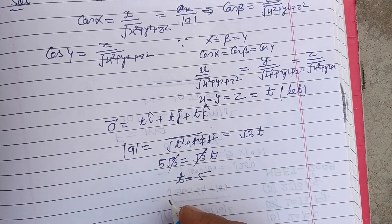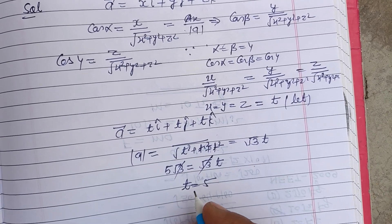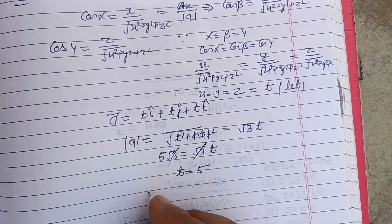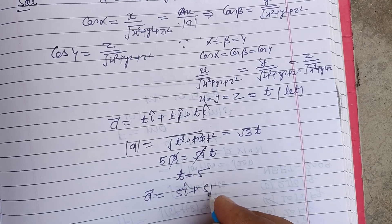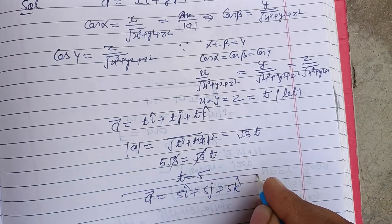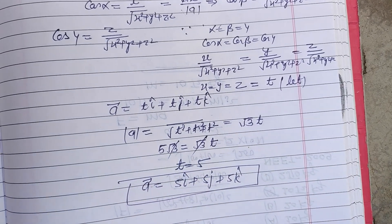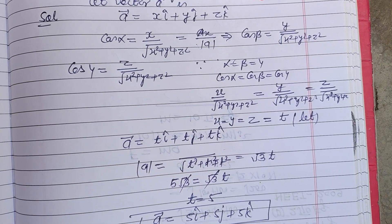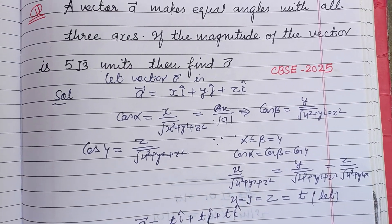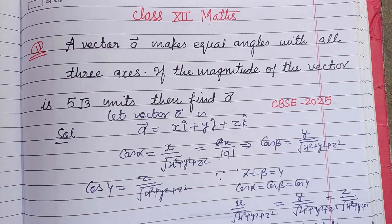Now putting this value, vector a is 5 i cap plus 5 j cap plus 5 k cap. So this is the vector obtained from the given conditions. I hope you got it. Please like the video, subscribe to the channel. Thanks for watching.